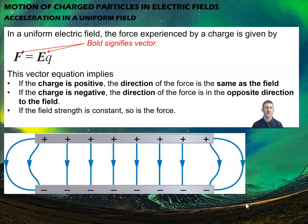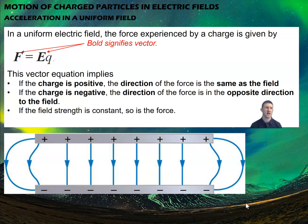In a uniform electric field, the force experienced by a charge is given by F = qE — the electric field strength multiplied by the charge gives the force exerted on the object. Both force and electric field are vectors, so the force is also a vector. If the charge is positive, the direction of force is the same as the field; if negative, it's opposite. If the field is constant, the force is constant, so anywhere within the uniform field region the force is exactly the same.